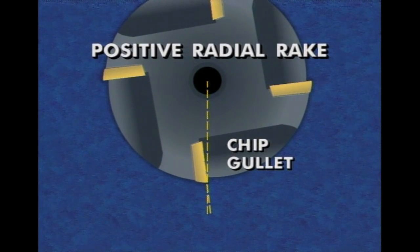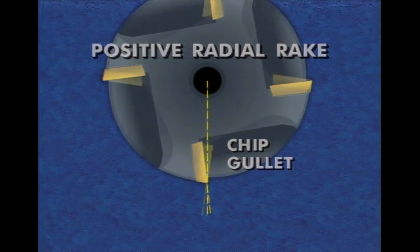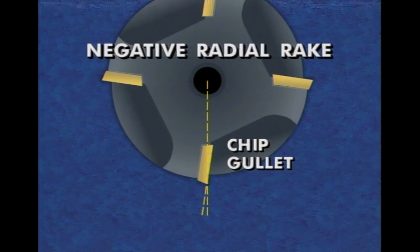If the insert tilts toward the chip gullet, it has a positive radial rake. If the insert tilts away from the chip gullet, it has a negative radial rake.